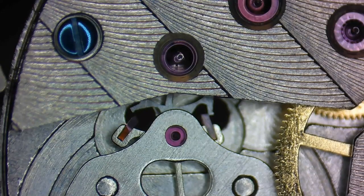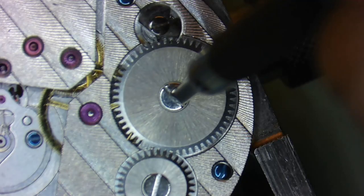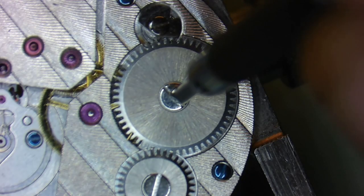All right, so to begin lubricating the pallet fork, we want to first inspect it for cleanliness and then install it into the movement. Now add just a minimal amount of power to the mainspring.